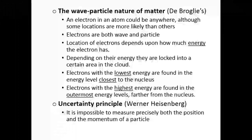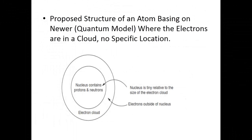An electron in an atom could be anywhere. Another scientist, Heisenberg, provided the Uncertainty Principle, stating that it is impossible to know precisely both the position and the momentum of a particle at the same time, because electrons move so fast it is only a probability. This is called the proposed structure of the atom based on the quantum model, where electrons are in a cloud with no specific locations.